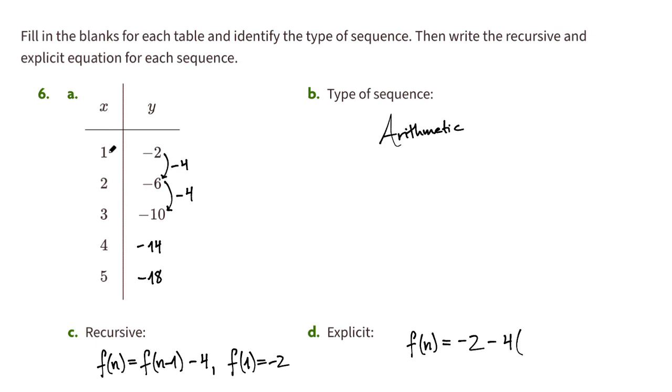Well, if x here is 2, then we only make one jump. If it's 3, we make two jumps, and so on. So it's one less than that value over there, so we'll call that n minus 1.